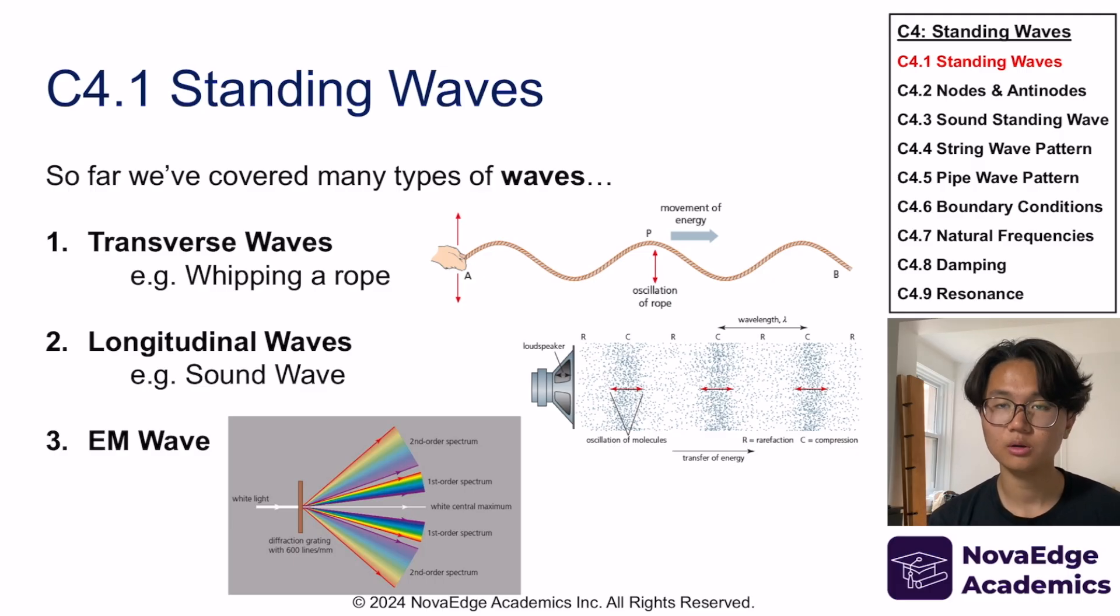So topic C4 is all about standing waves. Now, so far we've covered a lot of types of waves, like transverse wave which is like whipping a rope, longitudinal waves like sound wave. We've also had EM wave which is basically light. All of these are the types of waves we've covered. They have wavelength, frequency, velocity, all of these characteristics of a wave. We've covered superposition, diffraction, all of these stuff.